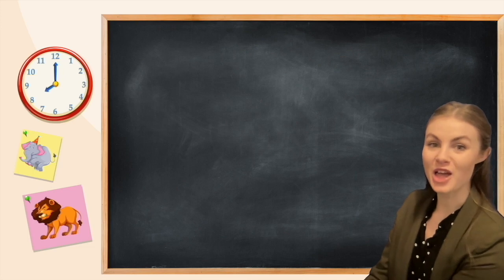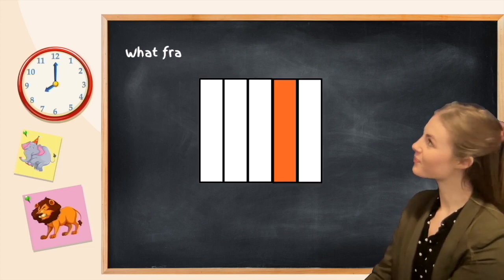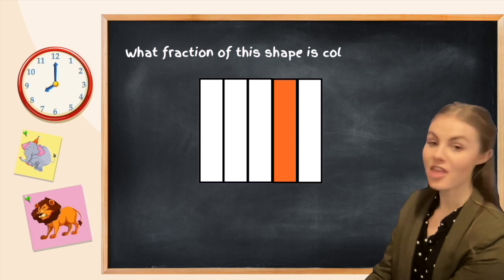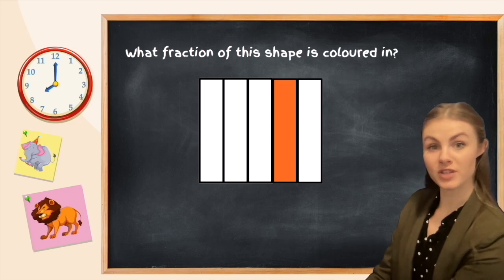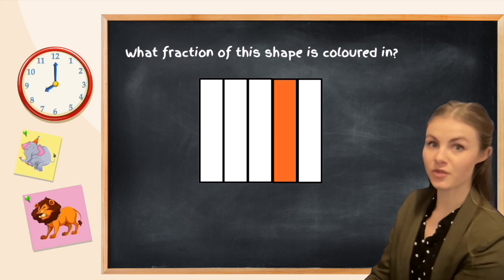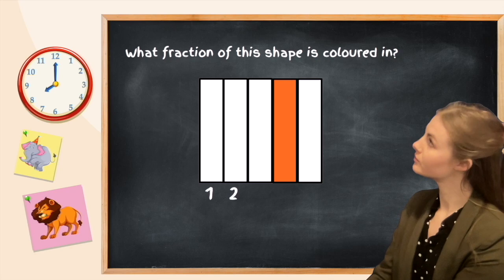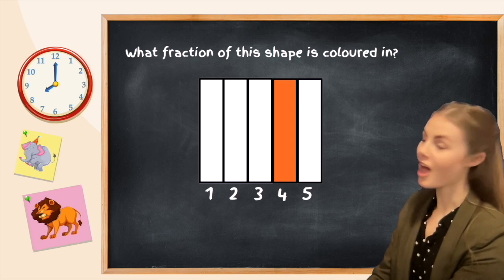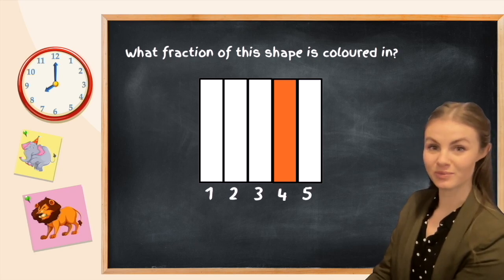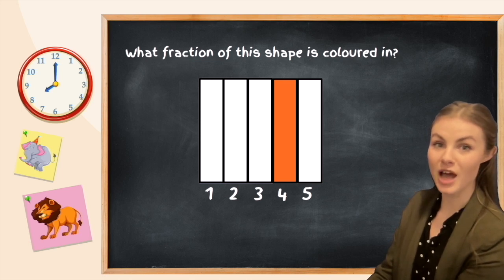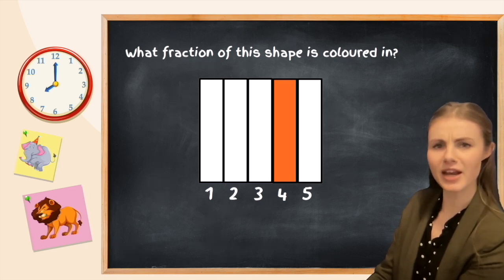Let's have a look at another example together. This question says what fraction of this shape is colored in. So to answer this we first got to figure out how many parts make up the whole. Five parts make up the whole. So we know that the five is going to be our denominator. Let's put that in.